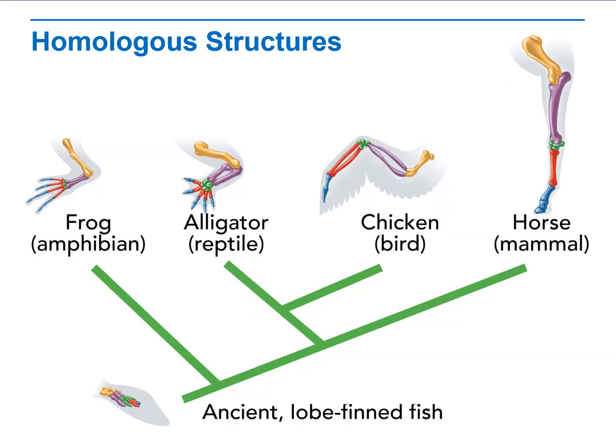By Charles Darwin's time, scientists had noted that all vertebrate limbs had the same basic bone structure, yet some were used for crawling, some for climbing, some for running, and others for flying. Darwin proposed that animals with similar structures evolved from a common ancestor with the basic versions of that structure. Similar structures shared by related species and inherited from a common ancestor are called homologous structures. Evolutionary theory explains homologous structures as the result of descent with modification from a common ancestor.